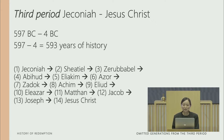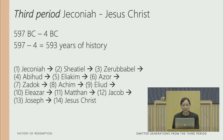The third period is from Jeconiah to Jesus Christ — from 597 BC to the birth of Jesus in 4 BC, giving us 593 years of history within the third period, from Jeconiah to Jesus Christ.